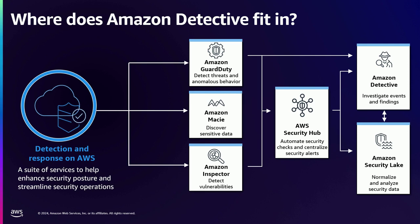This is our suite of detection and response services. Typically in a number of investigations, the starting point is Amazon GuardDuty. This will detect various threats like credential compromise, crypto mining, and things along those lines — active threats within your AWS environment. Amazon Inspector focuses on vulnerabilities; that is our vulnerability scanner. Each of these will feed into Security Hub, which is your findings aggregation point. And with all of this, you can analyze within Amazon Detective these findings and understand the root cause of an incident.